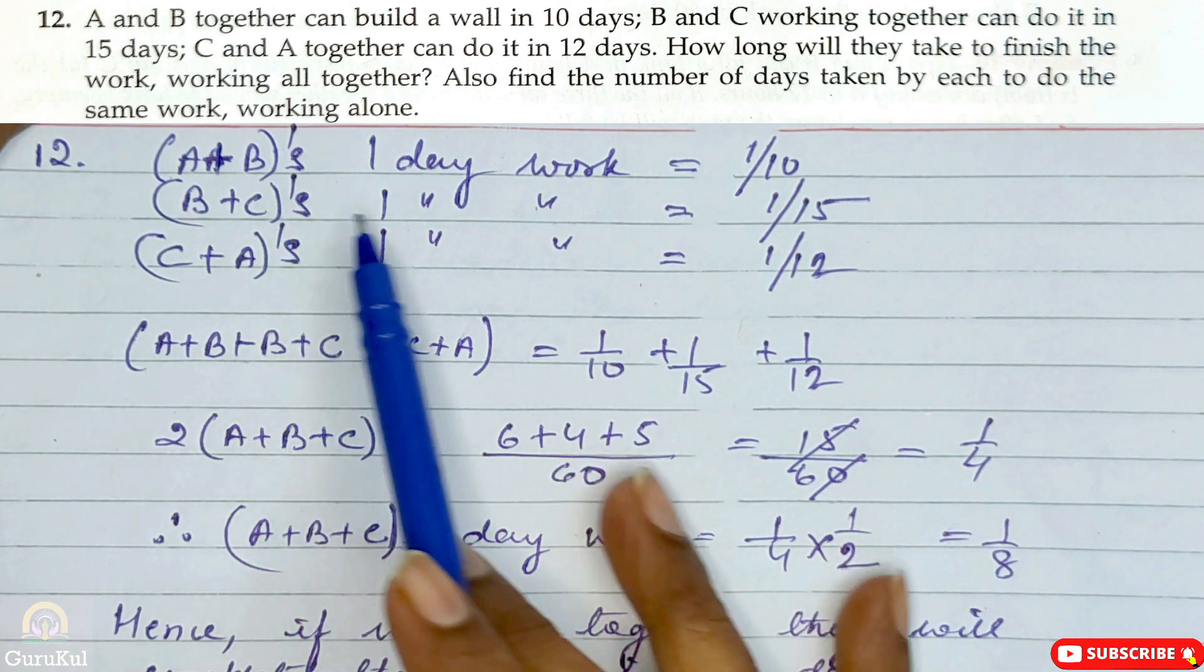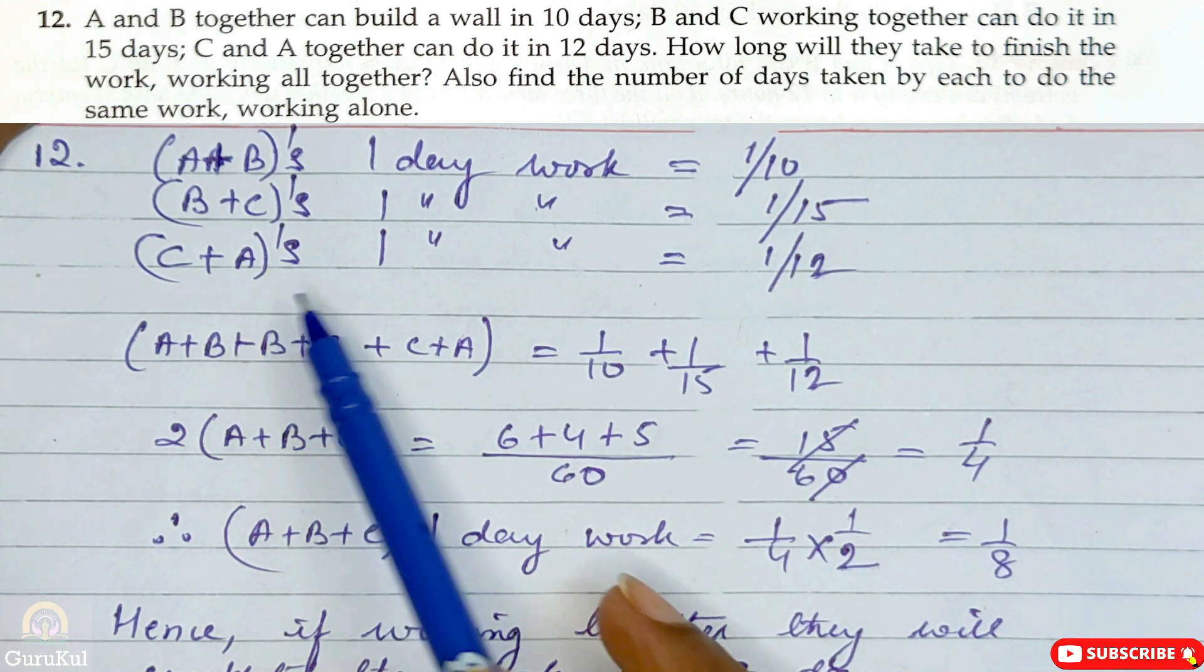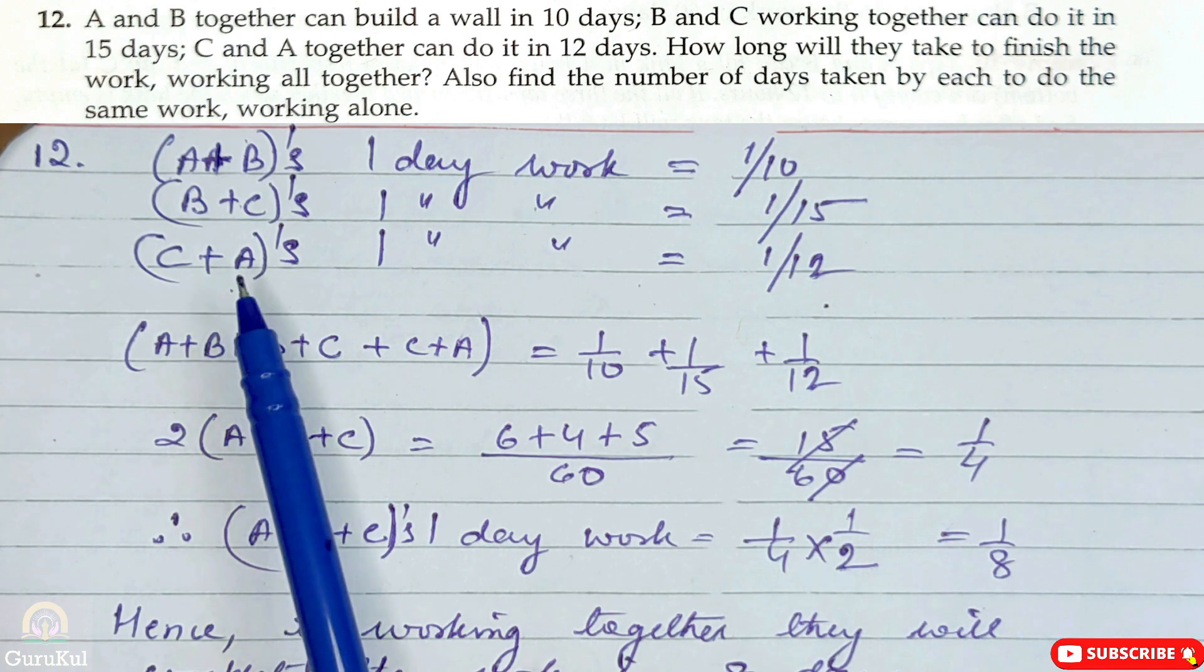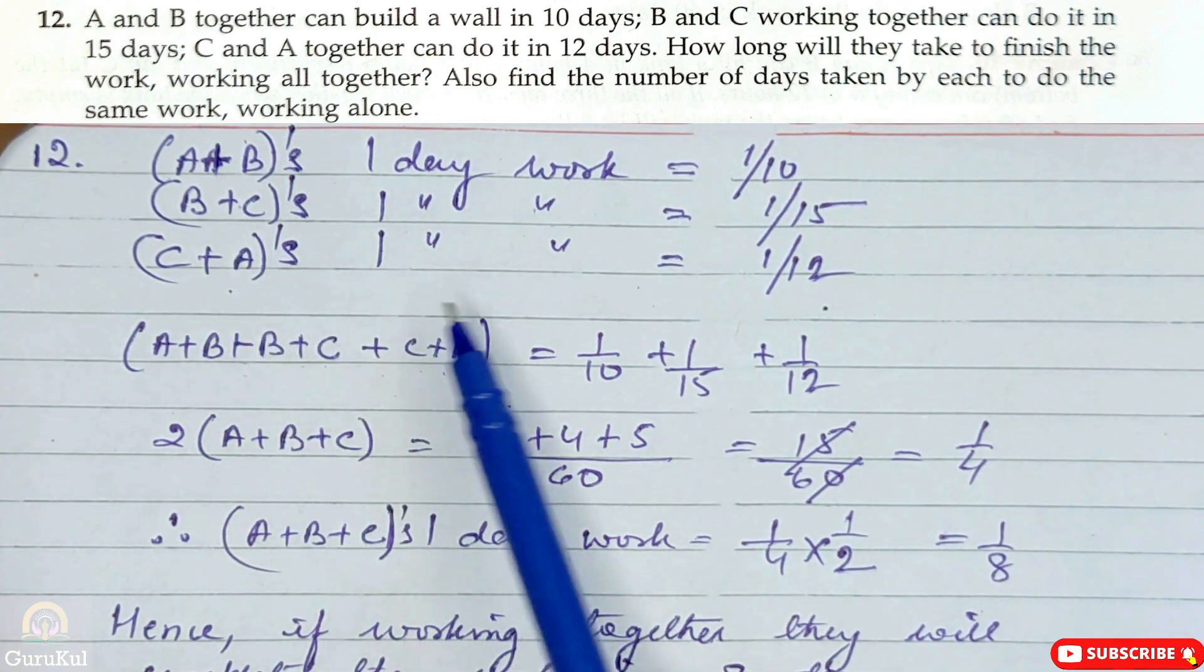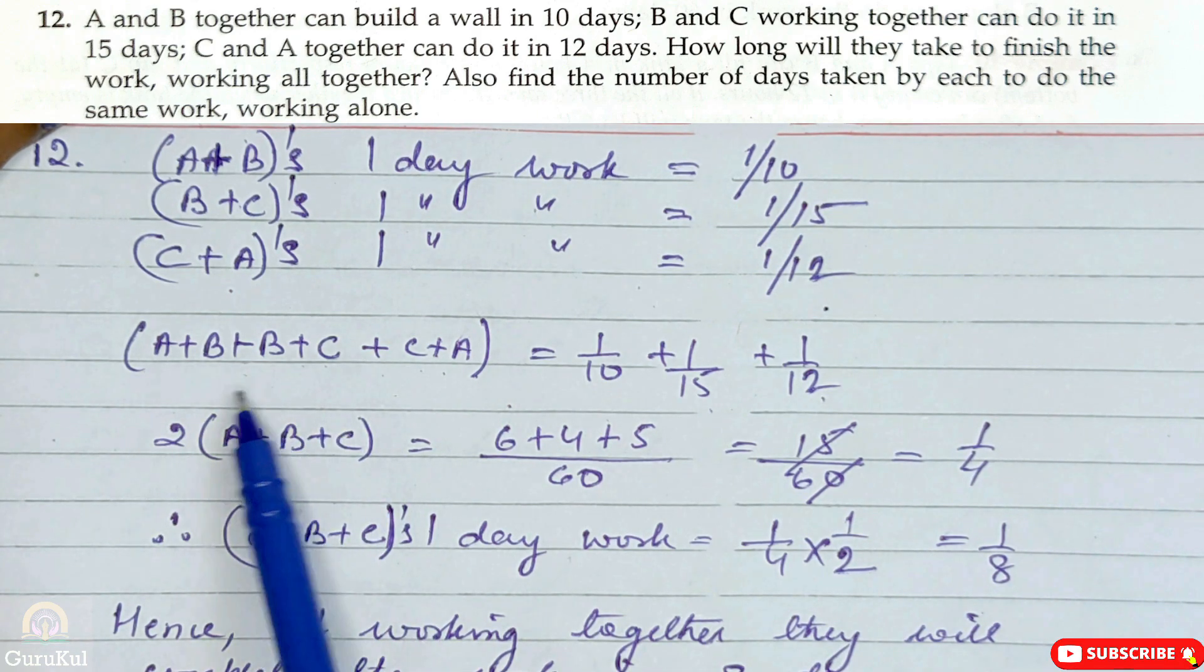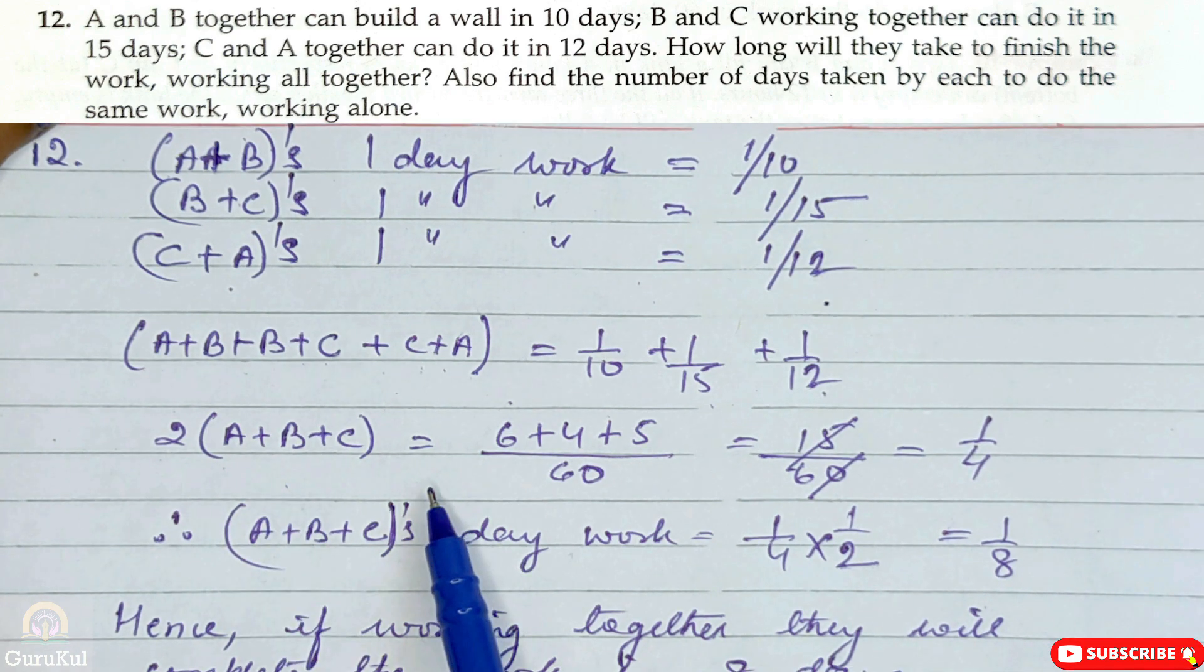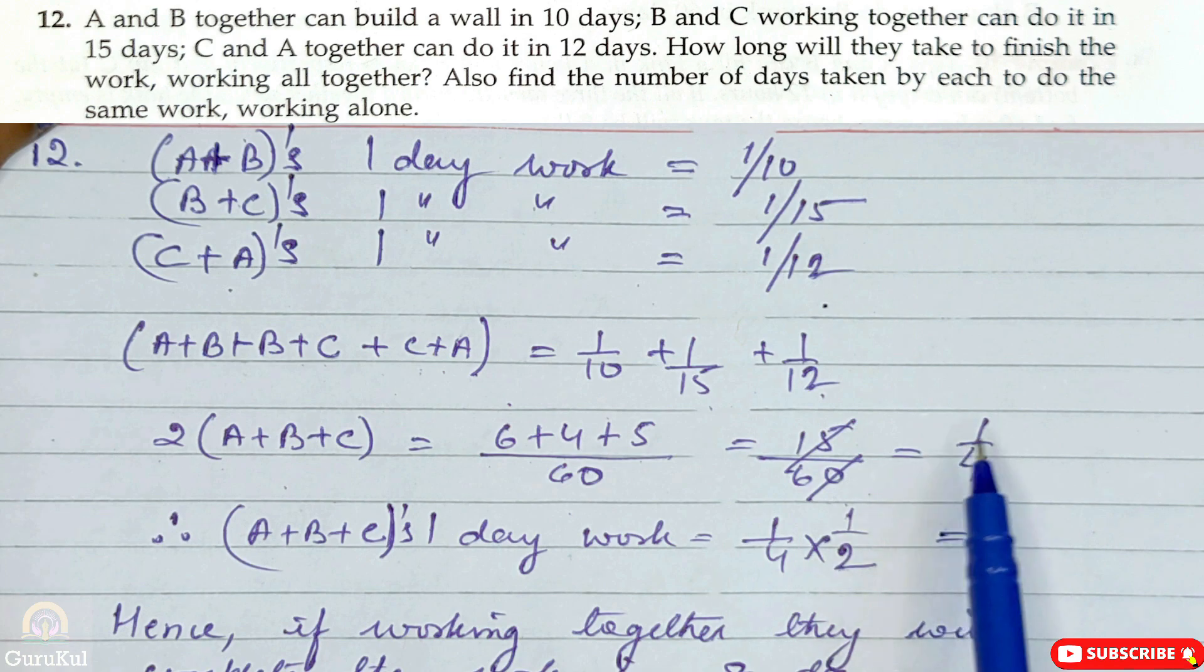So let's start. First, A plus B's one day work is 1 by 10. Similarly, B plus C's one day work is 1 by 15. And C plus A's one day work is 1 by 12. So we've found their one day work working in pairs. Now we'll add these three: A plus B plus B plus C plus C plus A, which is 1 by 10 plus 1 by 15 plus 1 by 12.